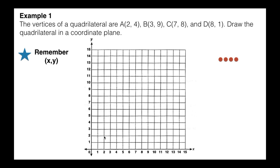So for A, I'm going to go over 2 and then up 4 — that point goes right there. Always label your points, so we call that A at (2, 4). Next, B is at (3, 9) — 3 is the x coordinate, so I go over 3 on my x axis, then all the way up to 9, and that is where that point goes. Label it: B at (3, 9). C is at (7, 8) — go over 7, up 8, right there. Label that. And finally, D — over 8 and up 1. Label that. You just have to make sure you always remember the x coordinate comes first, then the y. If it helps, x comes before y in the alphabet.